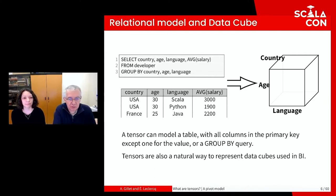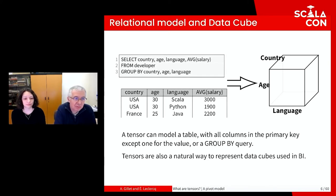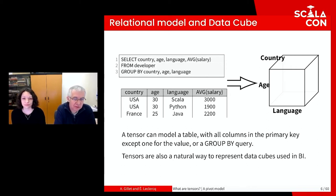Take for example the relational model. Consider a table storing the salary of developers with additional information such as country, age, and the programming language used. A GROUP BY SQL query allows computing the average salary depending on country, age, and programming language, and the result can be represented in a three-order tensor. So an n-order tensor is equivalent to a table with n columns in the primary key and one column for the value.